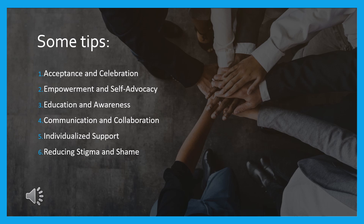The last principle is reducing stigma and shame. We want to create a brave and non-judgmental space where family members can openly discuss their experiences and challenges related to neurodiversity, reducing stigma and shame. Therapy helps individuals and families develop a positive and accepting attitude towards neurodivergent traits. Overall, a neurodiversity perspective in family therapy creates an inclusive, supportive, and empowering environment that fosters understanding, acceptance, and resilience within the family system, promoting the well-being and growth of neurodivergent individuals and their families.